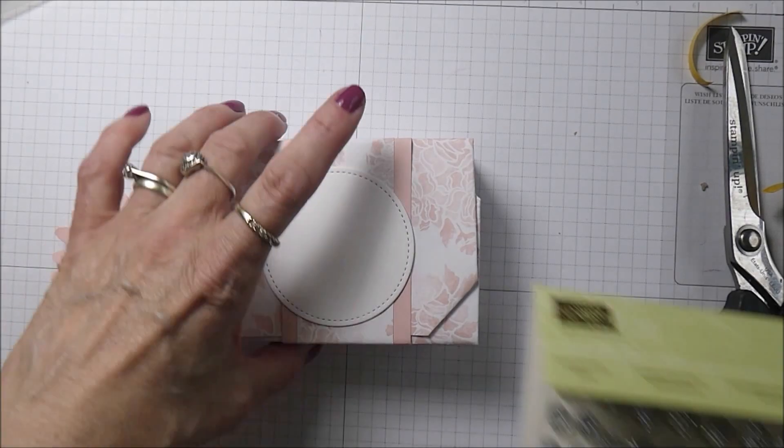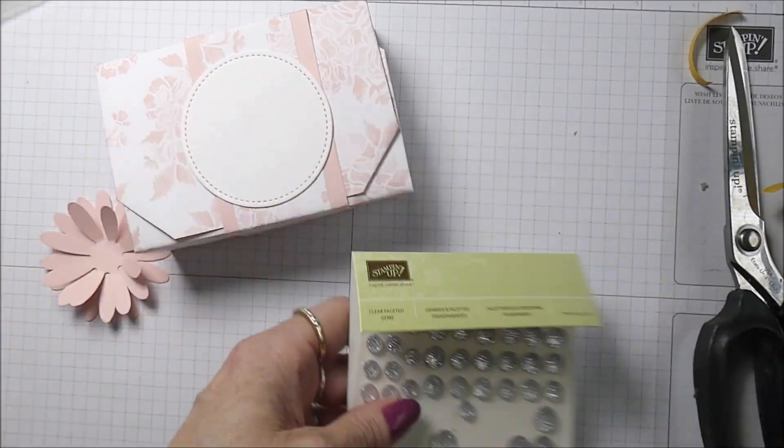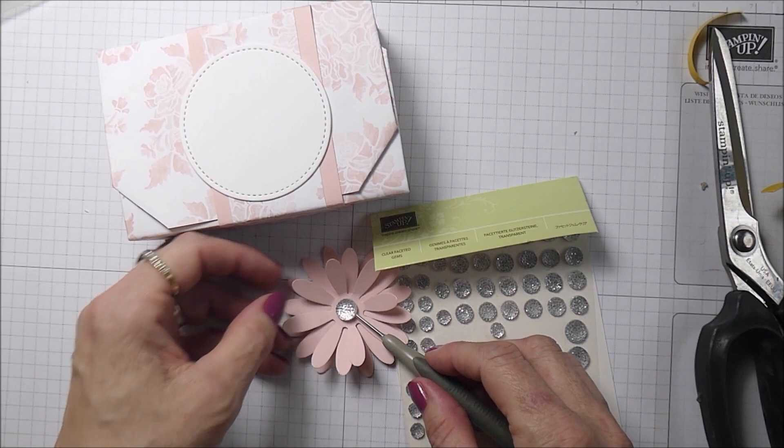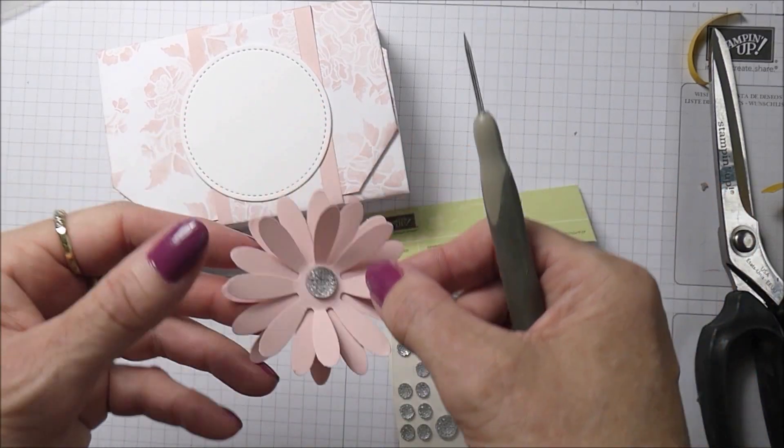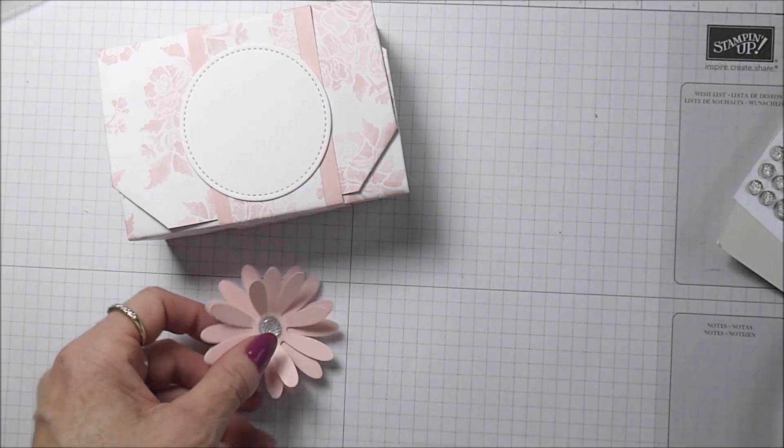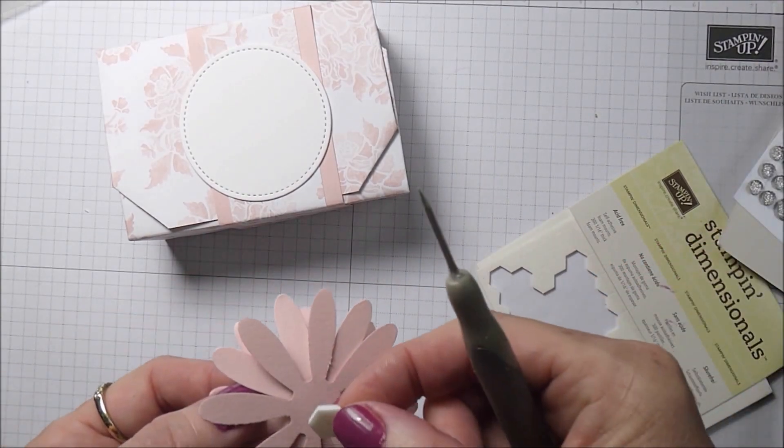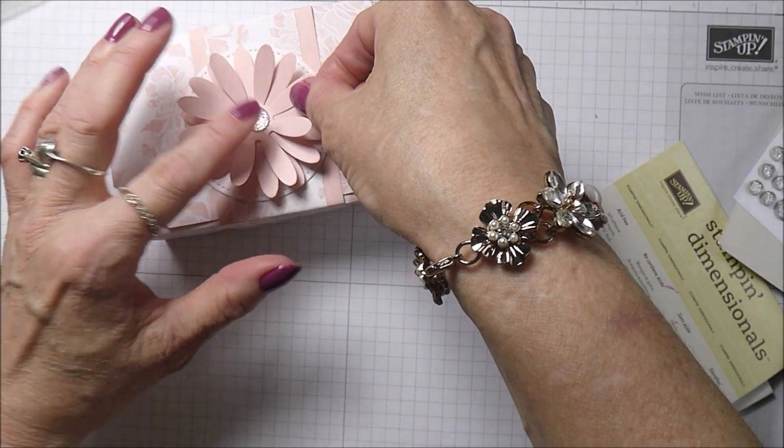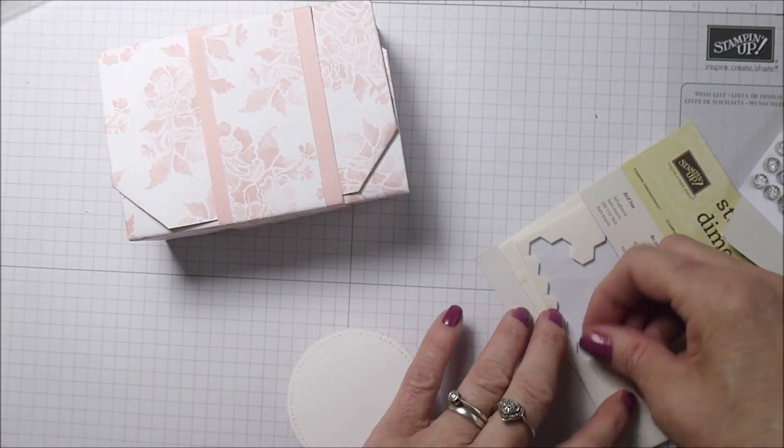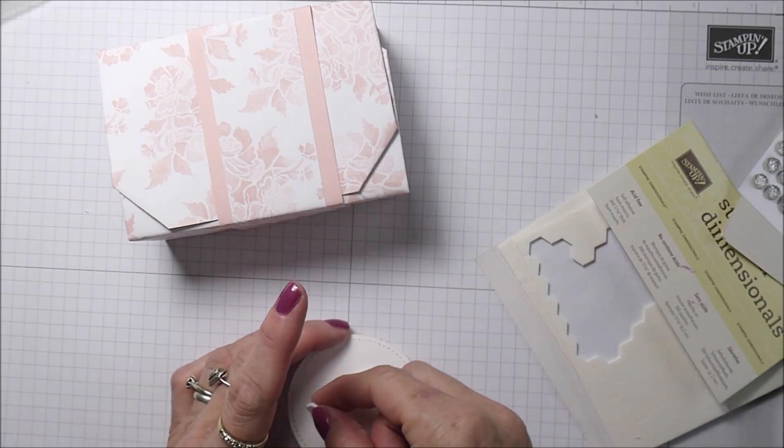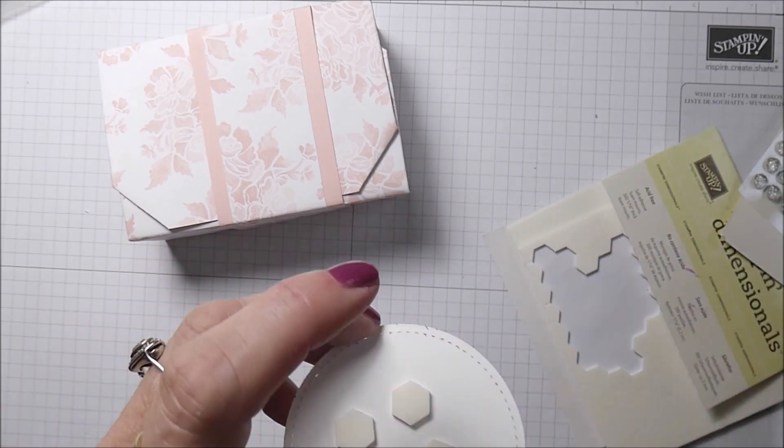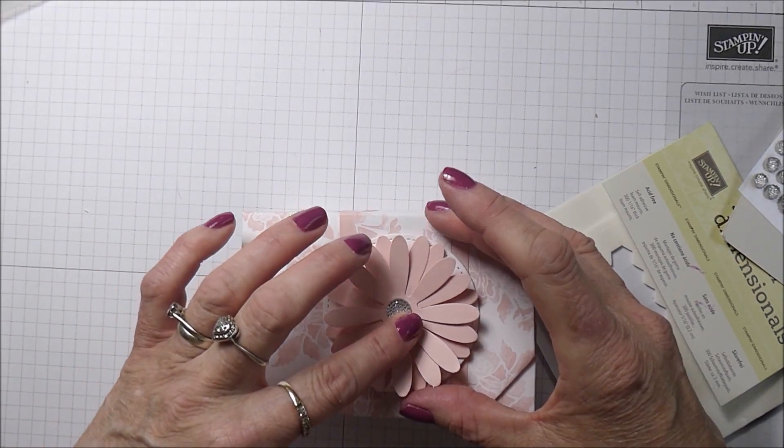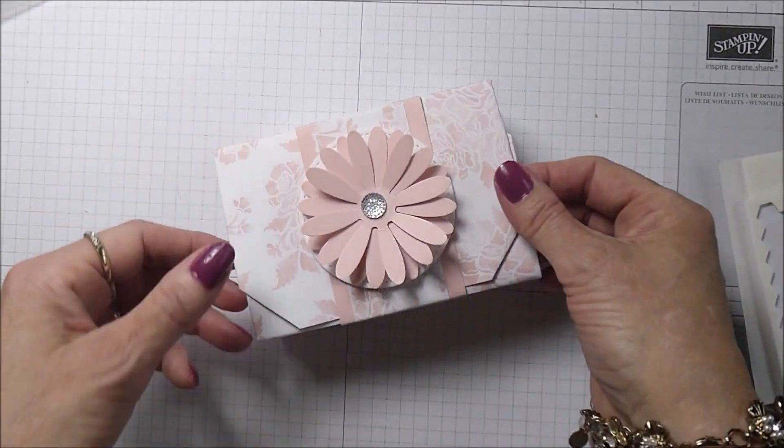I've also got these fabulous new clear faceted gems. I'm going to be applying a large one to the center of my daisy. A little bit of sparkle and bling. Beautiful. I'm going to take a dimensional and pop that there and place my flower there. Then I'm just going to take another four and put them on the back here. I'm just going to take my topper and place it there strategically on the top of my box.